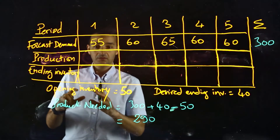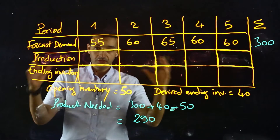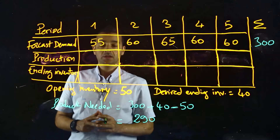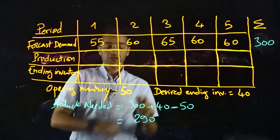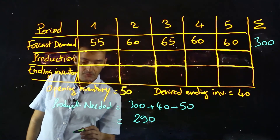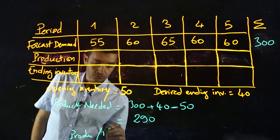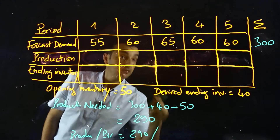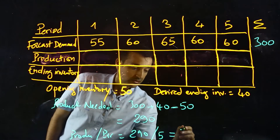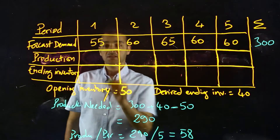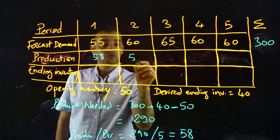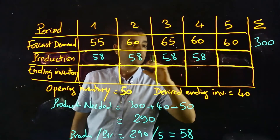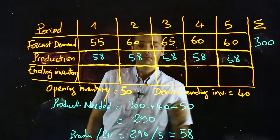So all the production needed for the five periods is 290. To calculate the production rate for each period, the production per period will be 290 divided by 5 periods — the result is 58. So we need to produce 58 units per period in a stable strategy.